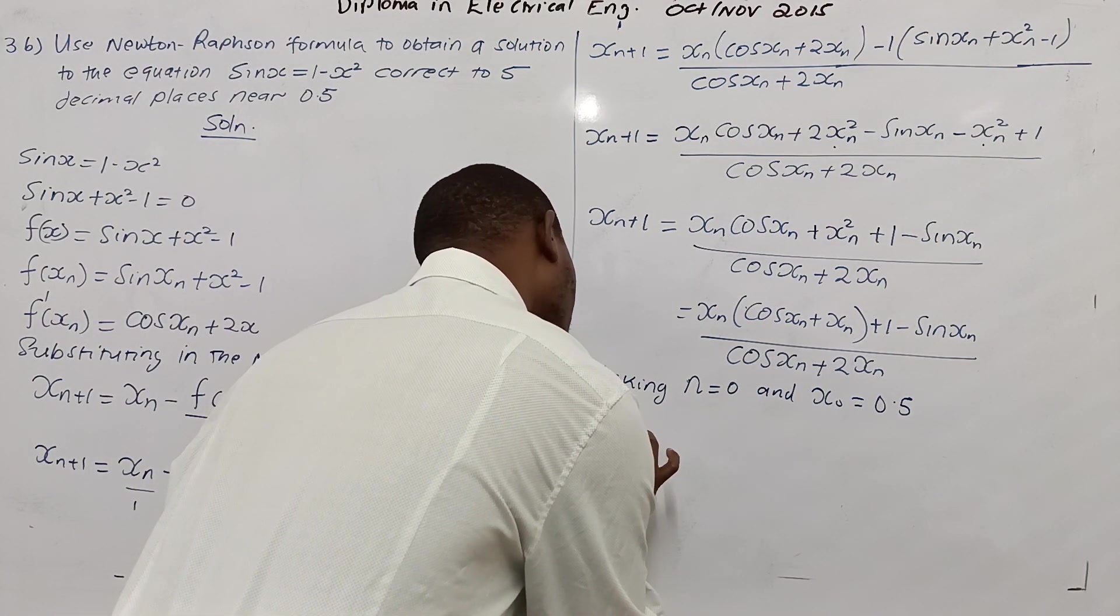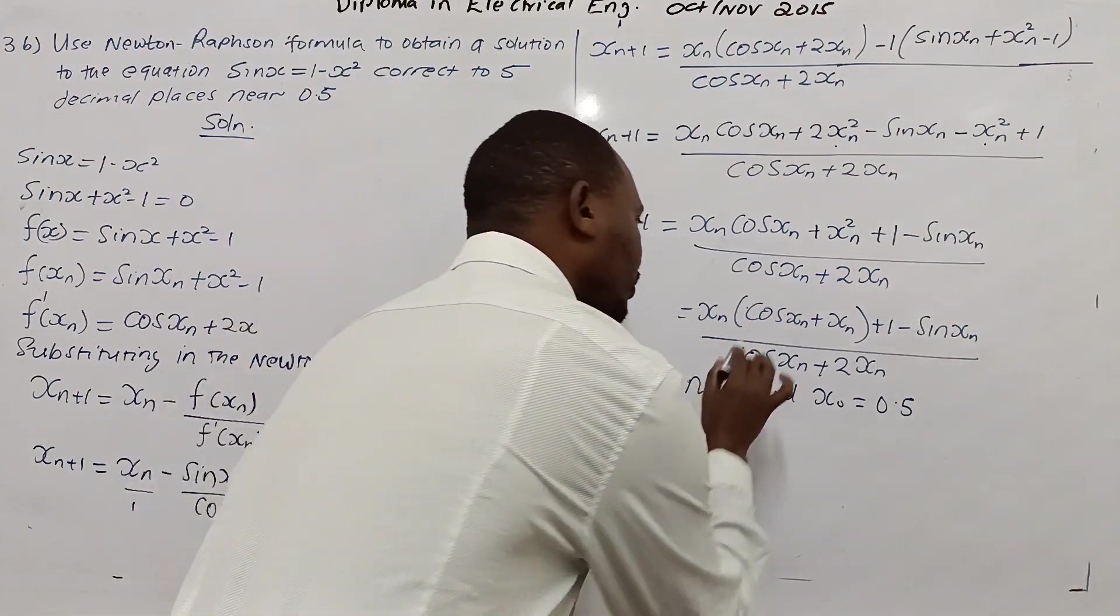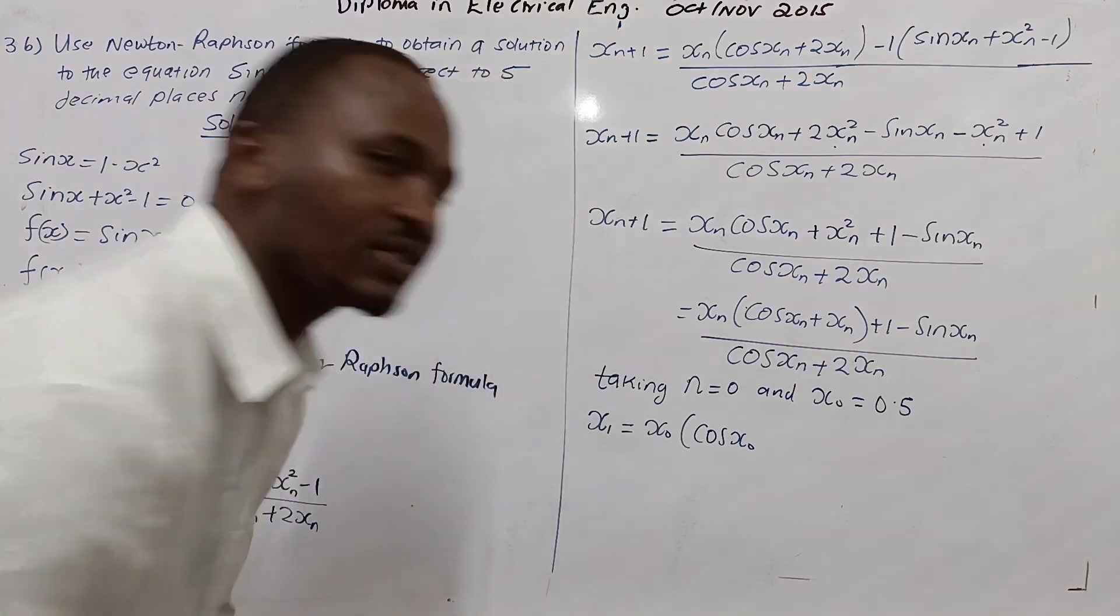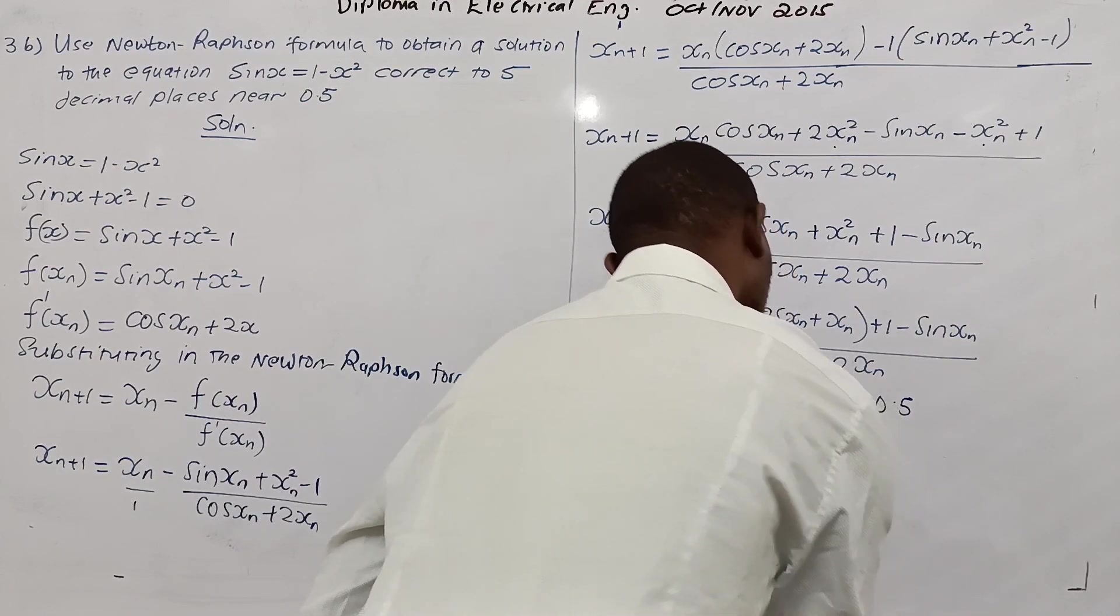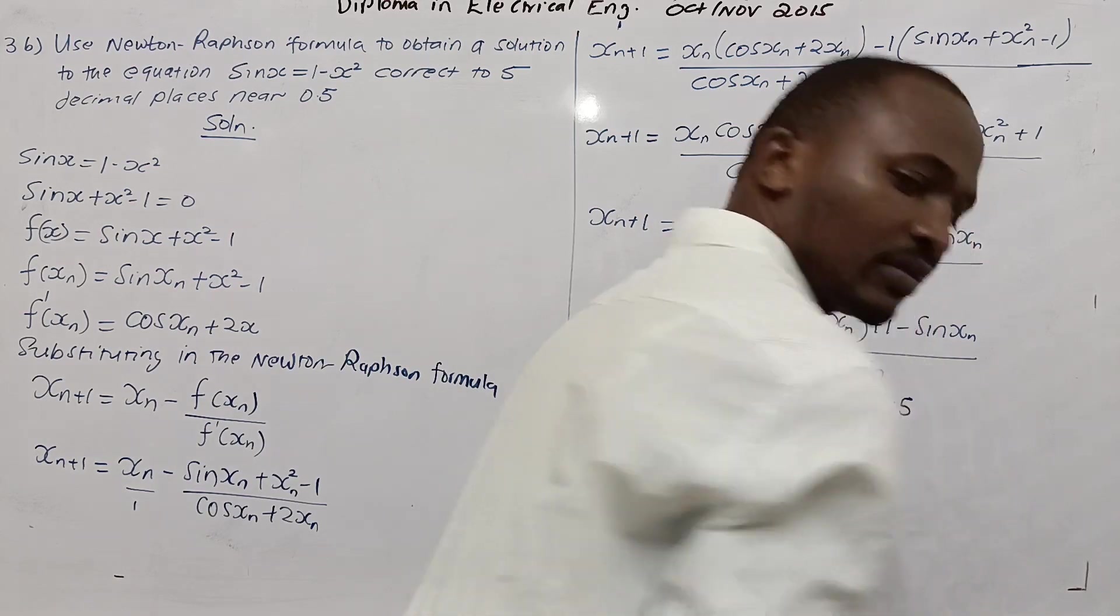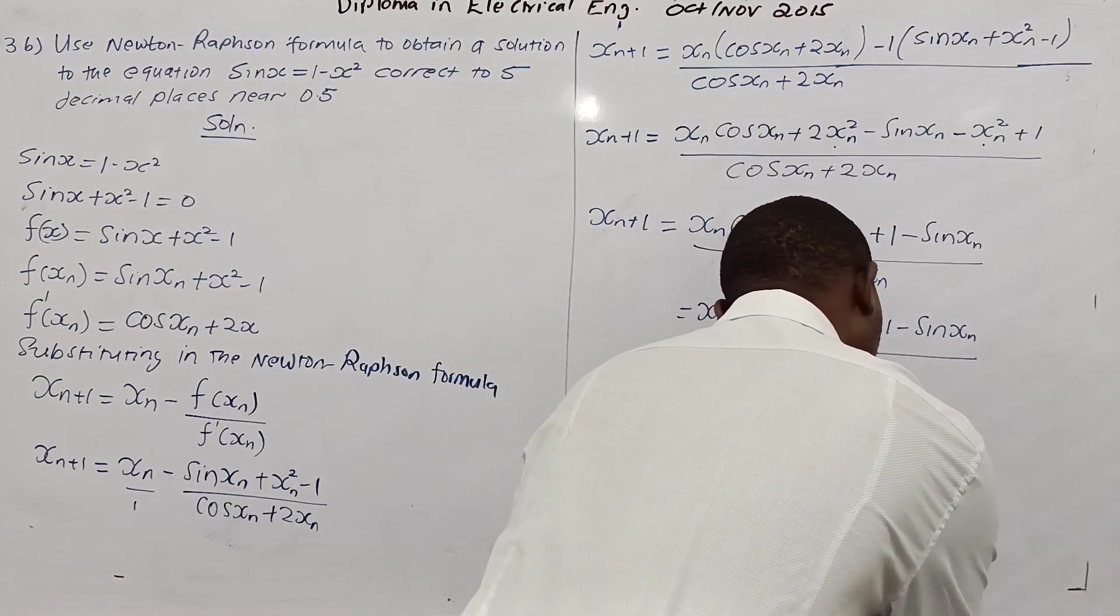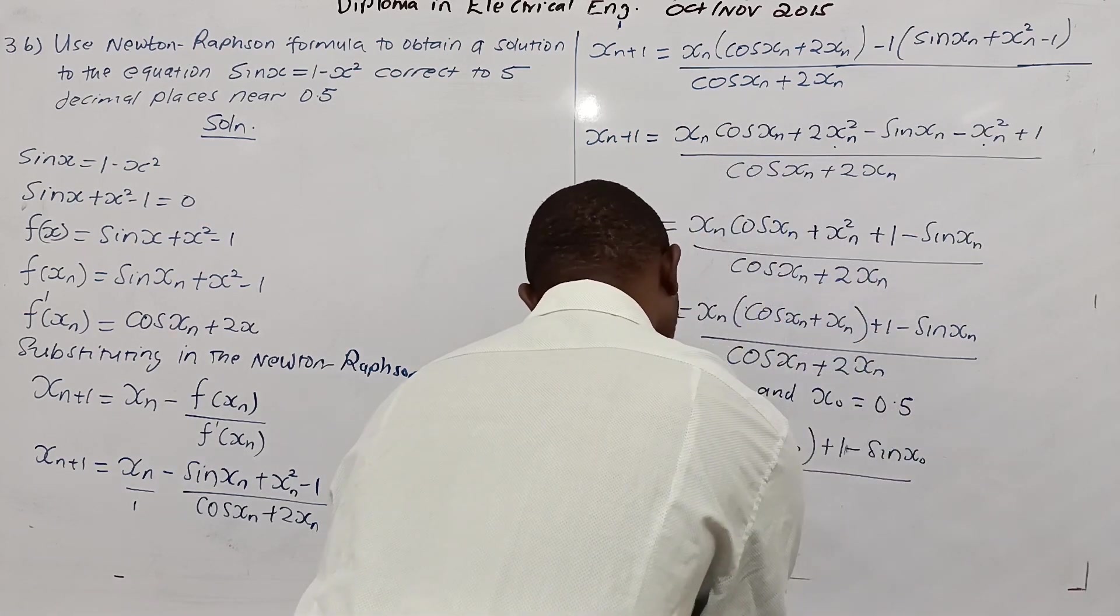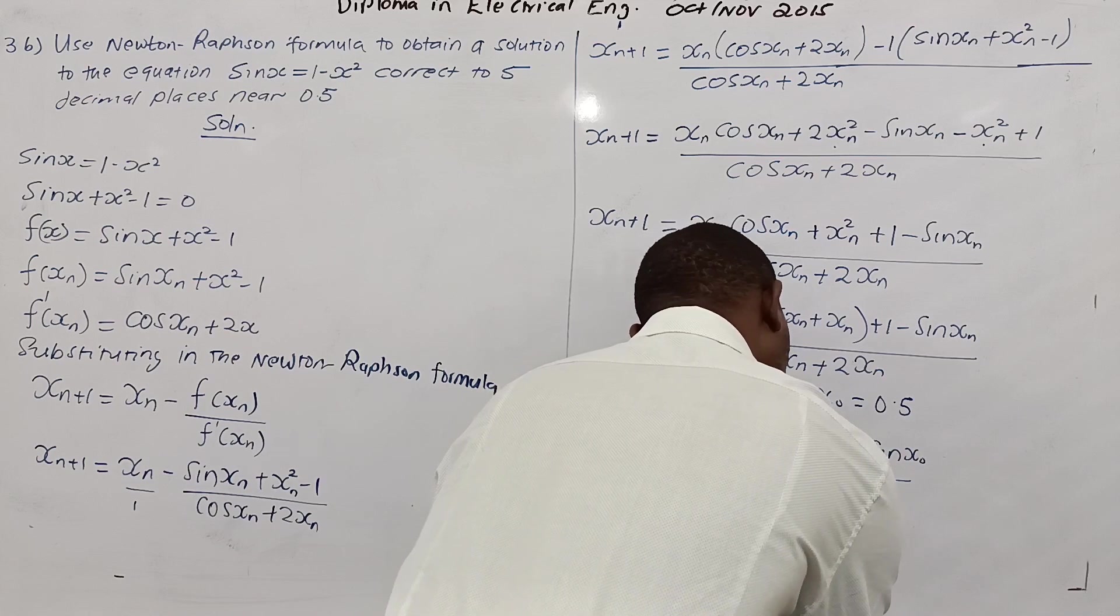So now we say x1, because 0 plus 1 is 1, xn open the bracket, there is a cos xn, taking n equals 0, plus xn, close bracket, plus 1, minus sine xn, over cosine of xn plus 2xn.